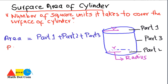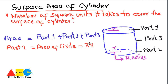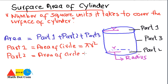First we have part 1. Part 1 is basically the circle, and since we need to find the area, we will find the area of a circle. So part 1 equals the area of a circle, which is πr², where π is a constant and r is the radius. Then we have part 2, which is again the same circular shape with radius r, so its area is also πr².